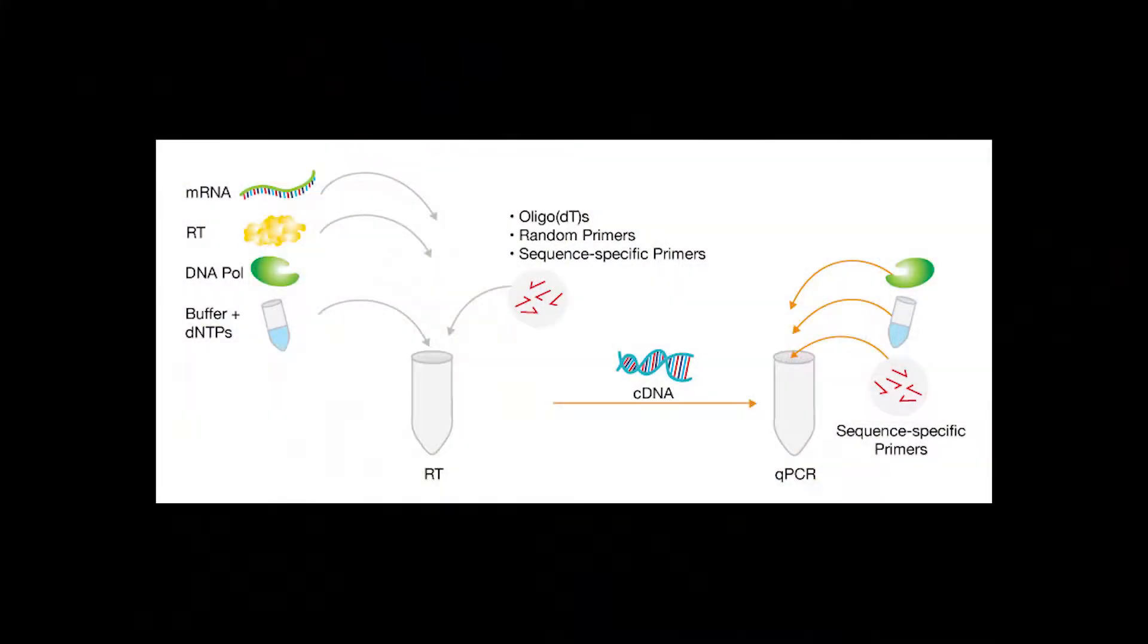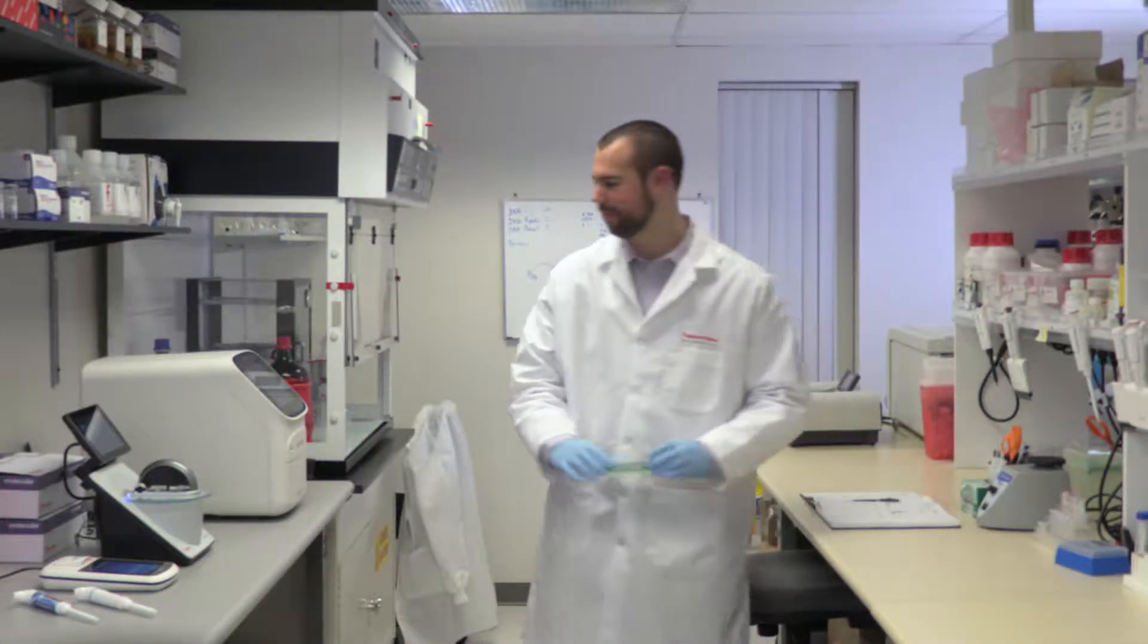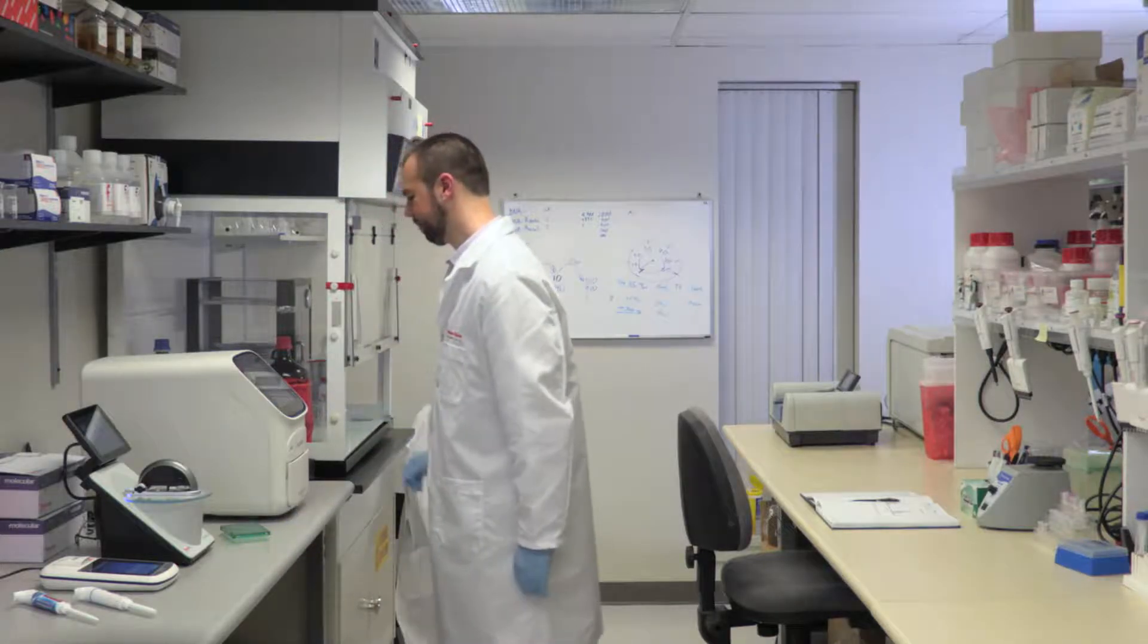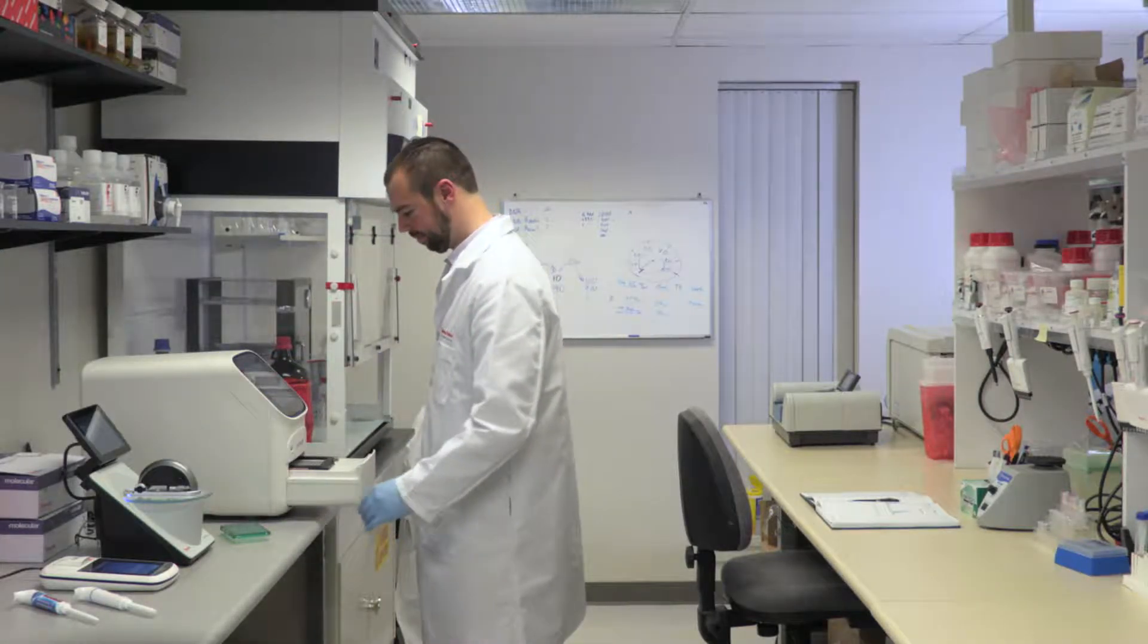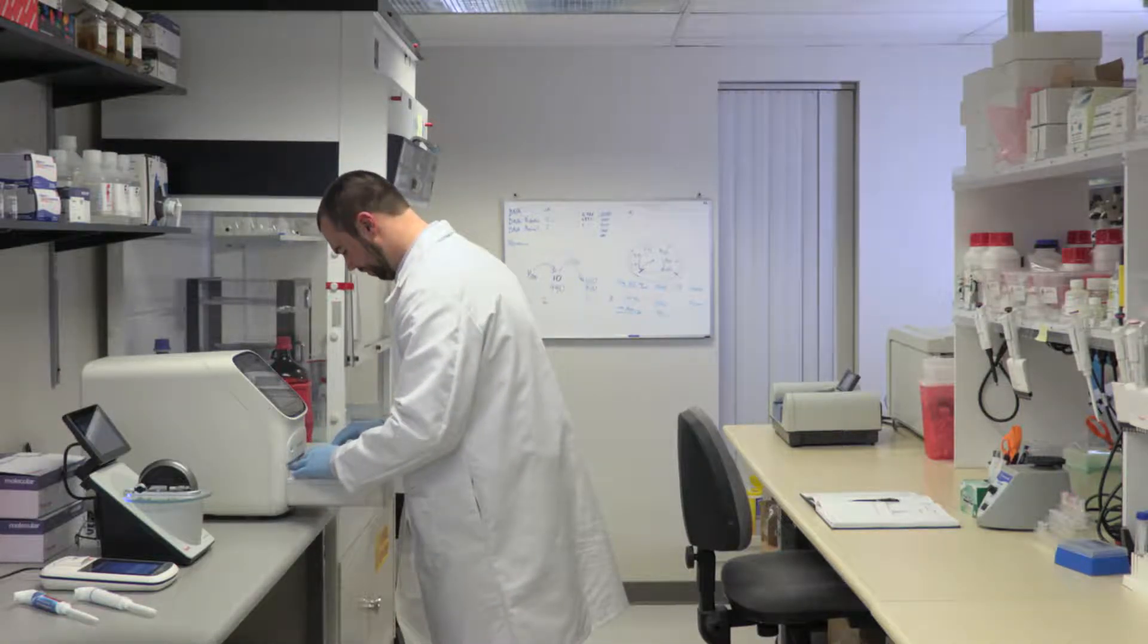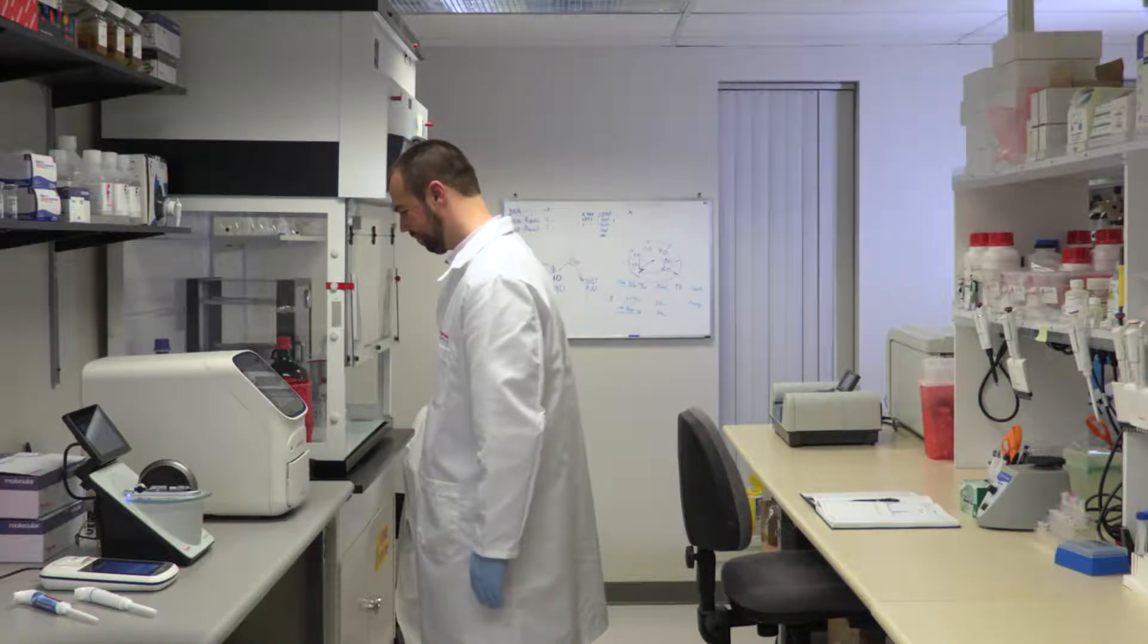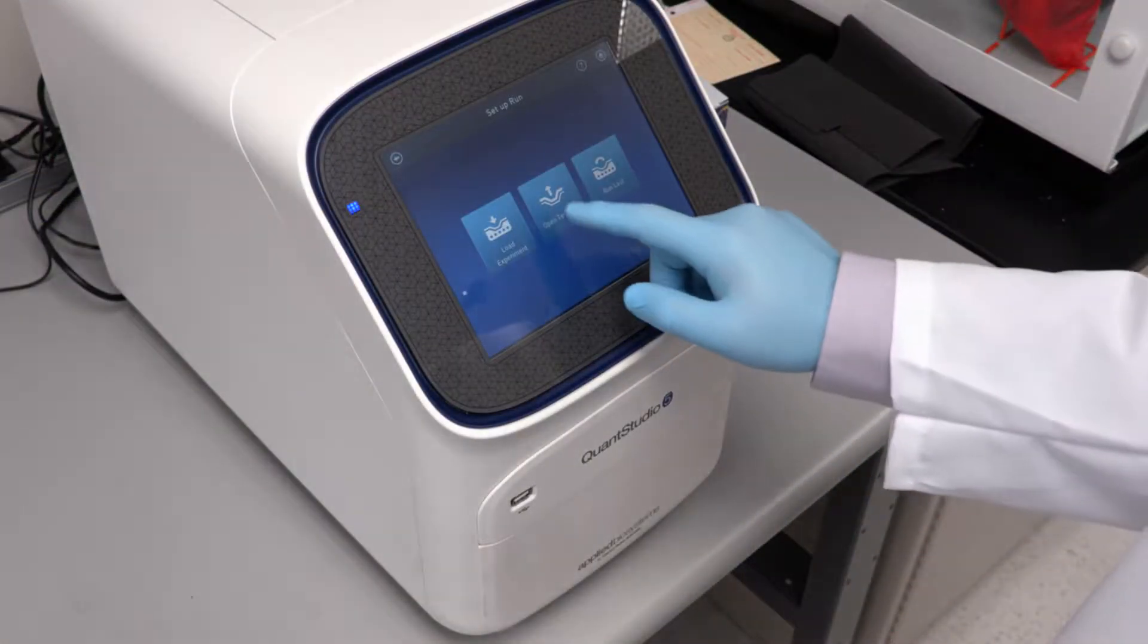During the second step, gene-specific primers are used in combination with cDNA template to determine the relative expression compared to reference genes. Reference genes are an important part of this reaction because they are used to normalize small differences in cDNA input. If there are large differences in cDNA amount, normalization based on reference genes can become problematic.